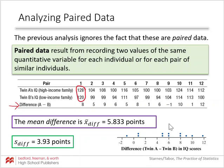You can see, both in the table and in the dot plot, that there was only one situation where the twin raised in a lower-income family had a higher IQ than the twin raised in a higher-income family. Ultimately, this study is helping us determine whether intelligence — as measured by an IQ test — is affected more by nature or nurture. That's the point of this study.